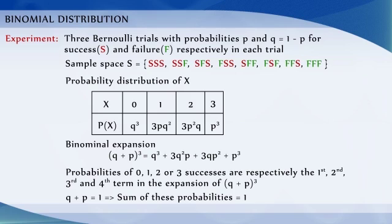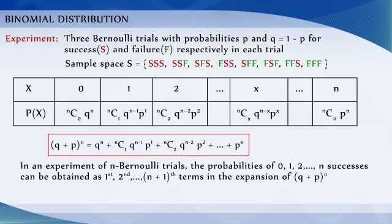Thus, we may conclude that in an experiment of n Bernoulli trials, the probabilities of 0, 1, 2, etc. up to n successes can be obtained as the first, second, third, etc. up to the (n+1)th terms in the expansion of (q+p)ⁿ.